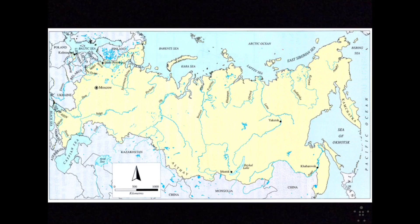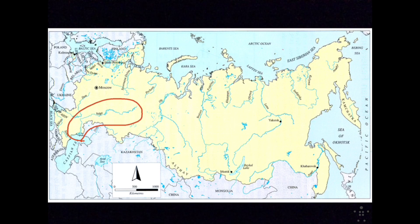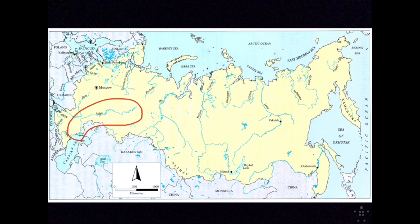Moving on to rivers, some of the world's longest rivers flow through Russia. One, and probably the most important river in Russia, is the Volga. The Volga is in European Russia, meaning it lies west of the Ural Mountains in the North European Plain region. It's the fourth longest river in Russia. This river is vital to Russia — they need it for survival — so much so that it's even called the Mother Volga, the Mother of Russia.